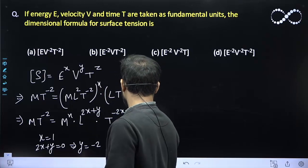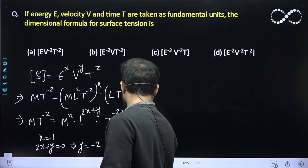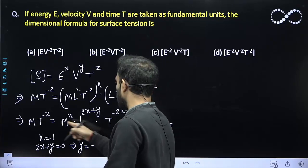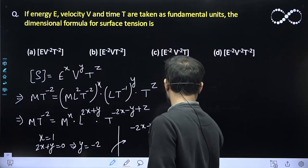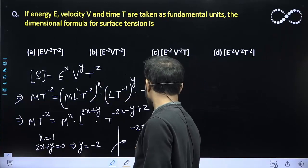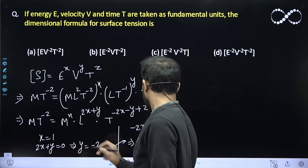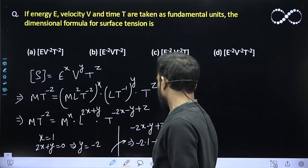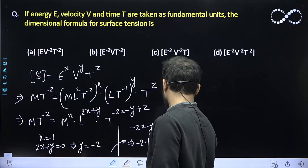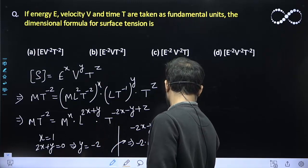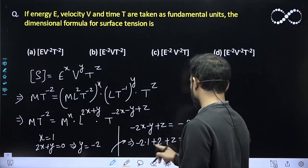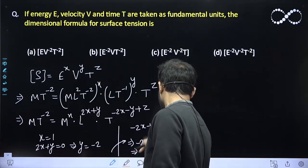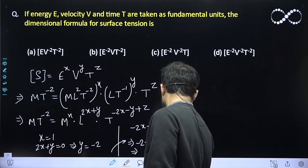Now, for T: minus 2x minus y plus z must equal minus 2. Substituting x equals 1 and y equals minus 2: minus 2(1) minus (minus 2) plus z equals minus 2, giving minus 2 plus 2 plus z equals minus 2. The minus 2 and plus 2 cancel, so z equals minus 2.